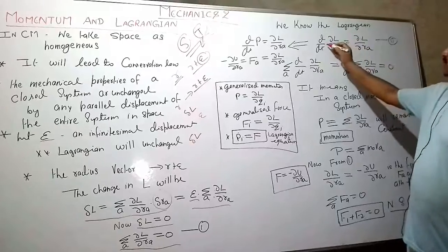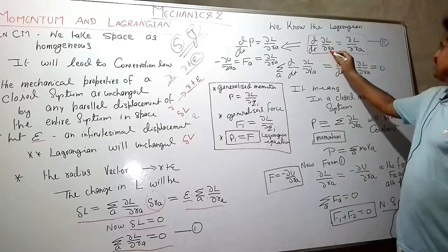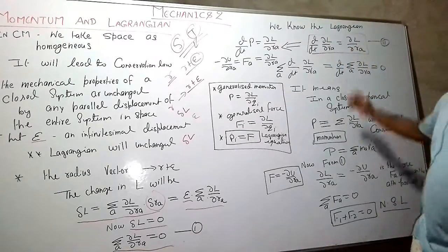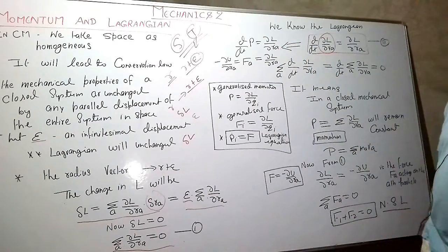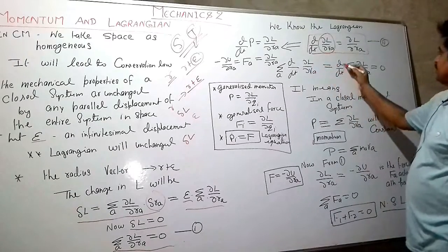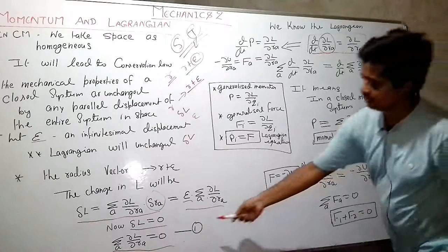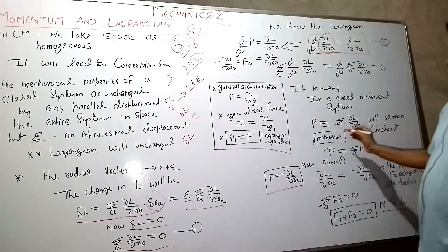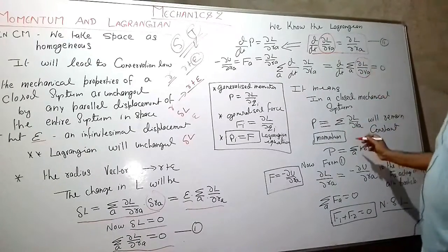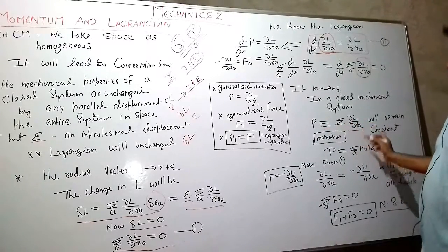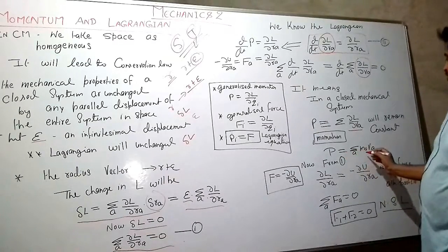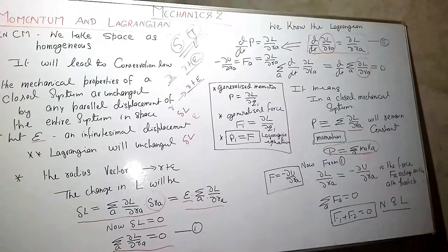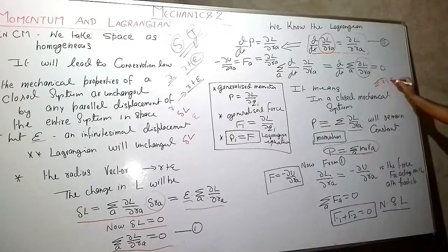From the Lagrange equation, d/dt(∂L/∂v_a) = ∂L/∂r_a, and d/dt(∂L/∂v_a) is nothing but dp/dt. Since from our first equation ∂L/∂r_a equals zero, we get dp/dt = 0, meaning momentum p = ∂L/∂v_a is conserved for the closed system. Replacing p with mv gives the standard formula for momentum.